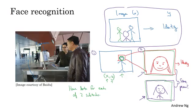But in contrast, if you were to try to learn everything at the same time, there is much less data of the form X comma Y where X is an image like this taken from a turnstile and Y is the identity of a person. So because you don't have enough data to solve this end-to-end learning problem, but you do have enough data to solve sub-problems one and two, in practice, breaking this down to two sub-problems results in better performance than a pure end-to-end deep learning approach.